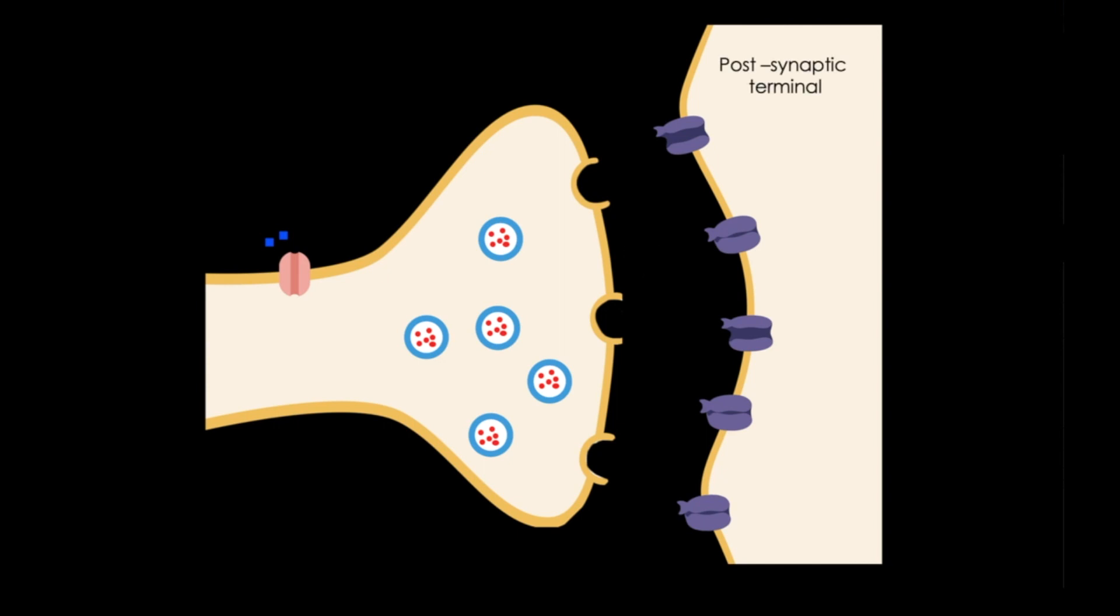And when the action potential reaches the axon terminal, calcium channels on that neuron will open, causing calcium to enter the terminal. That calcium then causes vesicles in the terminal to release neurotransmitter.